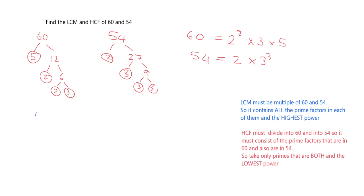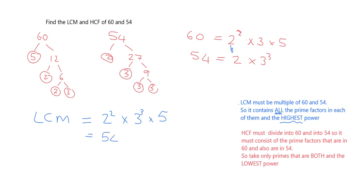Let's go for our lowest common multiple. For the LCM, despite the fact that you're looking for the lowest common multiple, you do almost exactly the opposite: you take everything and the highest power. So taking all the primes — 2, 3, and 5 — with the highest powers: 2², 3³, and 5. That gives 4 × 27 × 5 = 540. So the lowest common multiple is 540.